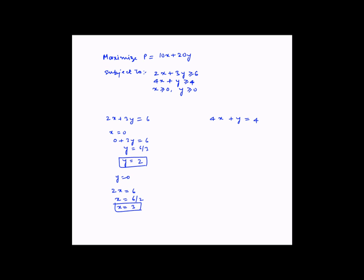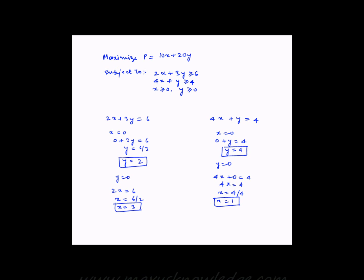Similarly, for the second equation, let us put x equal to 0. We get 0 plus y is equal to 4, or y is equal to 4. And if we put y equal to 0, we get 4x plus 0 is equal to 4, or 4x is equal to 4, or x is equal to 4 divided by 4, which is equal to 1. So the y intercept for the second line is 4 and the x intercept is 1.